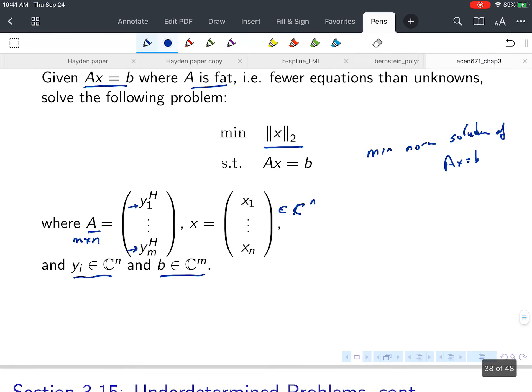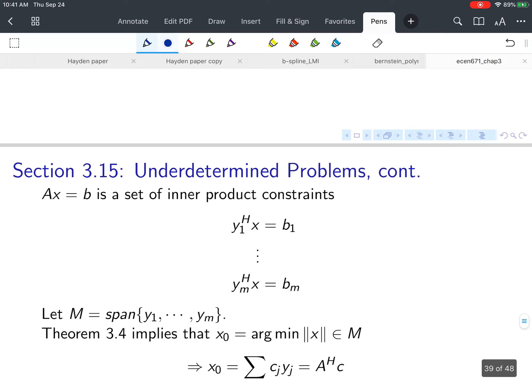How do we find the solution? We can think of this matrix equation AX equals b. This is [y₁^H, ..., y_m^H]^T times x equals [b₁, ..., b_m]^T. Looking at the first row, y₁^H x equals b₁, and we have M of these equations. These are all inner product constraints.